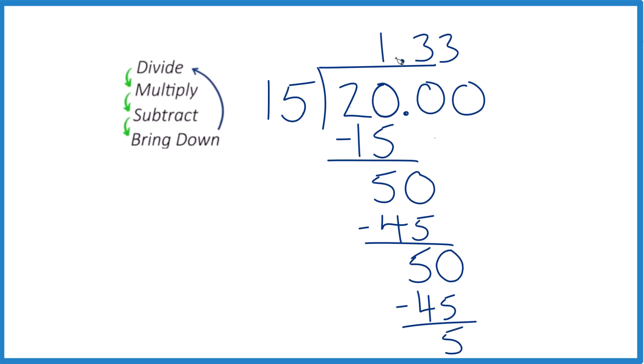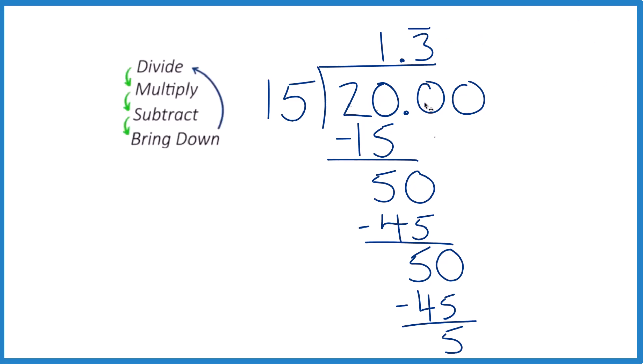So let's call it 1.3 with a bar. We'll put a bar over this here to show that that number repeats, and that's it. 20 divided by 15 is 1.33333.